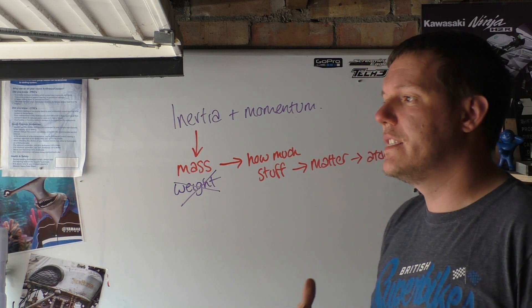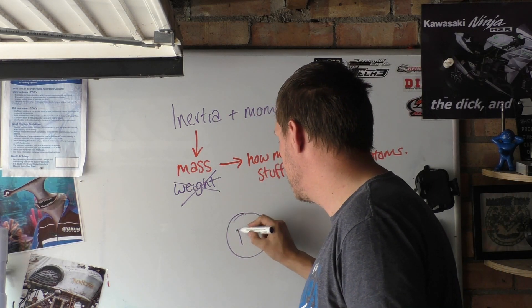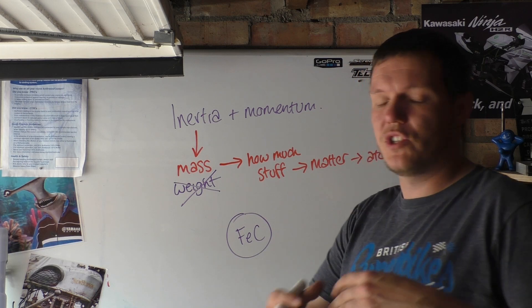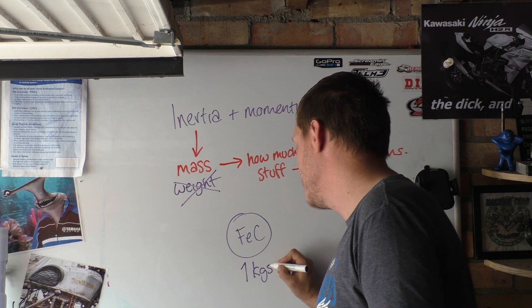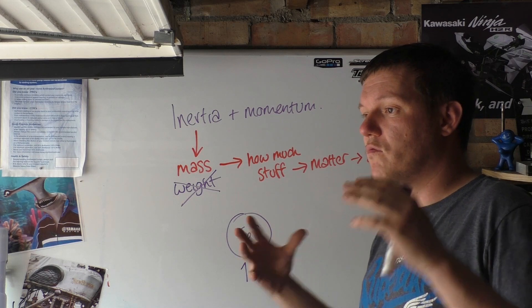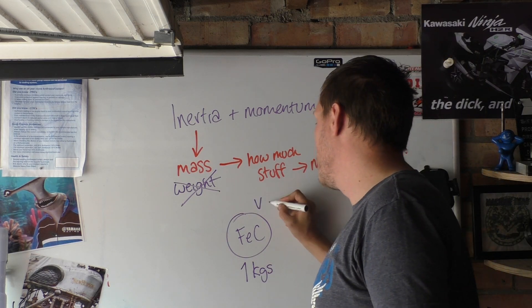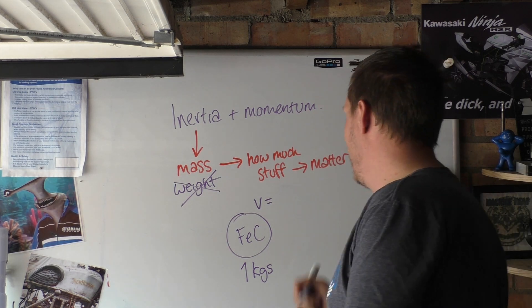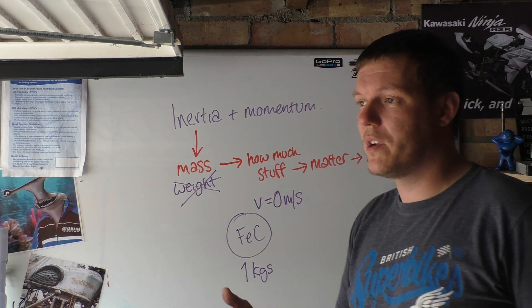So inertia is the base. If you have a ball and this is steel, a steel ball, and let's say it has a mass of one kilogram. This ball will require force to move it, to change its velocity. So let's say its velocity is zero meters per second. This is what we call the rest mass.